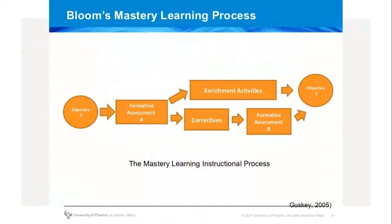Here's a nice visual about how this learning process happens. You have your objective and you start off with a formative assessment — remember, formative assessment is an assessment for learning. Then there would be any corrections, or for children that have done it correctly, an enrichment. Then they would do another formative assessment, and once everybody has mastered objective one, we move on to objective two, and so the process continues.